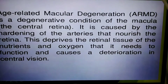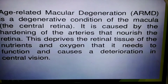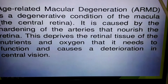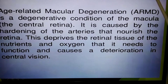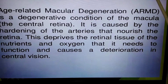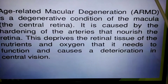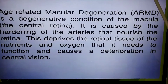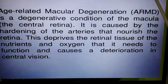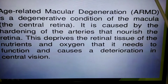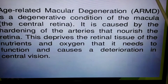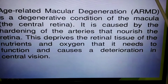Age-related macular degeneration, or ARMD, is a degenerative condition of the macula, the central retina. It is caused by the hardening of the arteries that nourish the retina. This deprives the retinal tissue of the nutrients and oxygen it needs to function, and causes a deterioration in central vision.